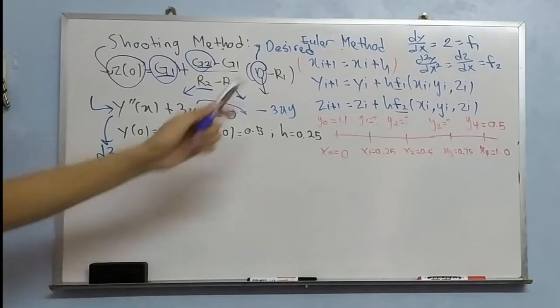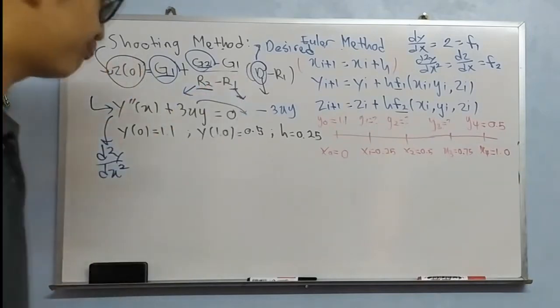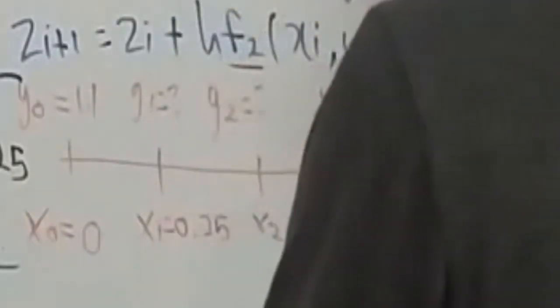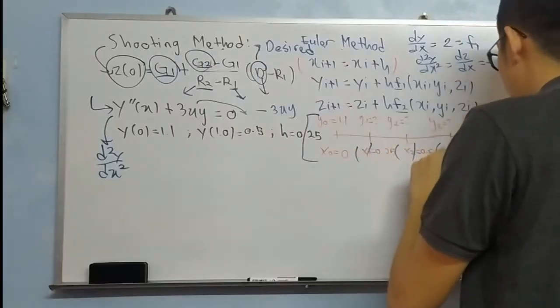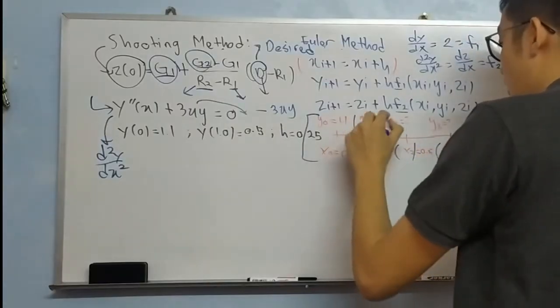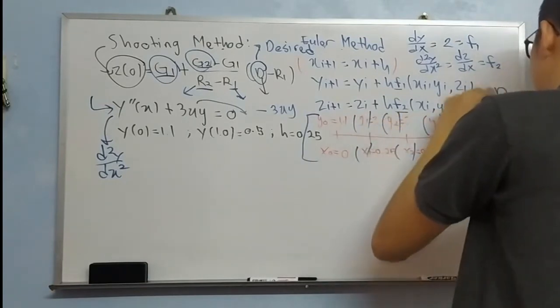Okay, so in shooting method, we are going to apply Euler method to proceed with shooting methods. So from this equation, we are going to determine X1, X2, X3, X4, Y1, Y2, Y3, and also Y4. This is our desired value, D.